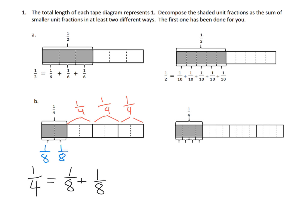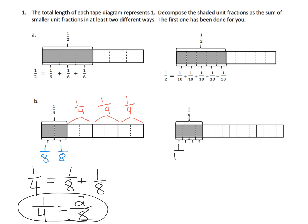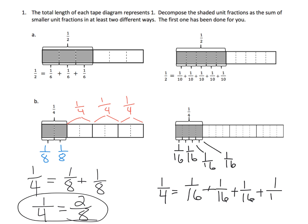Now if we wanted to we could go even one step further — this is a little bit beyond this particular lesson — but we could say one-fourth is equal to two-eighths. That part is some foreshadowing if you wish. Now here we've got one-fourth that has been cut into four little pieces, so that makes each one of those little pieces a one-sixteenth. So one-fourth is equal to one-sixteenth plus one-sixteenth plus one-sixteenth plus one-sixteenth. Ultimately one-fourth is equal to four-sixteenths, but that's beyond the scope of this particular lesson.